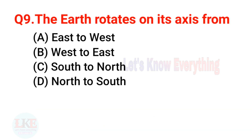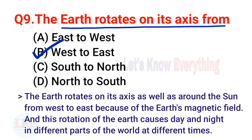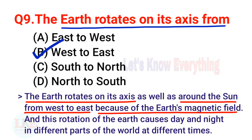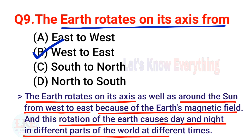Question 9: The Earth rotates on its axis from west to east. The Earth rotates on its axis as well as around the sun from west to east, because of the Earth's rotation. This rotation of the Earth causes day and night in different parts of the world at different times.